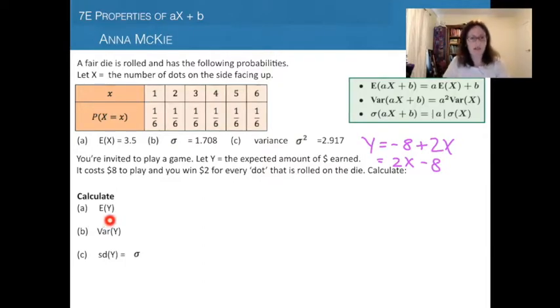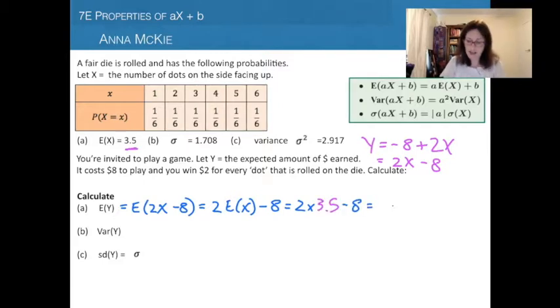To work out our expected value of Y, that's how much money on average you could expect to earn from this game. This is where you can use this fact. If you have a function in this form, you can rearrange it to work out the expected value: E(Y) = E(2X - 8) = 2E(X) - 8. We bring the 2 out the front and multiply by the expected value, then subtract 8. We've already worked out E(X) is 3.5, so E(Y) = 2(3.5) - 8 = -1.